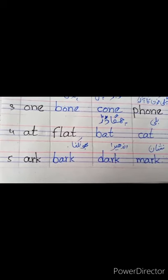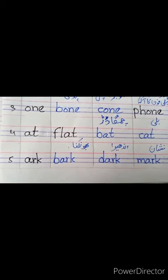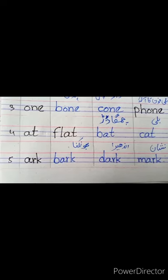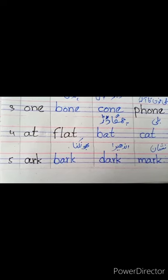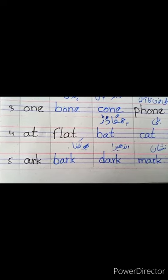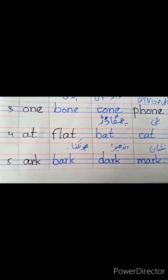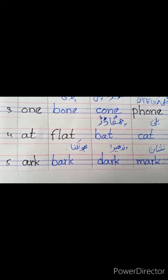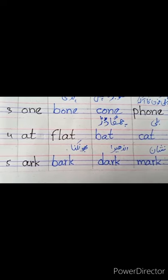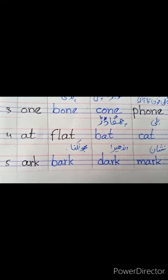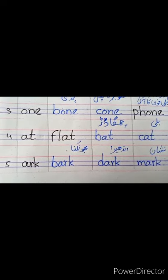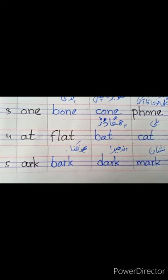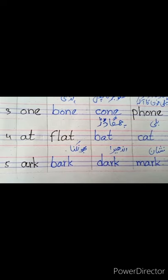Number five — ہمارے پاس ایسے words ہیں جو A, R, K پہ end ہوتے ہیں. So first one is 'bark' — B, A, R, K. Bark کہتے ہیں جانور جب بھونکتے ہیں، اس کو بھی کہتے ہیں — یا جب ہم درخت سے چھلکا اتارتے ہیں تو ہم اس کو بھی bark کہتے ہیں.